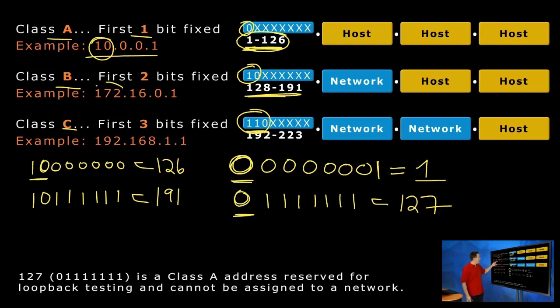What about 172? 172 falls between 128 and 191. Guess what? Class B address. And then lastly, 192. That falls within this range, 192 to 223. So it's a Class C address.